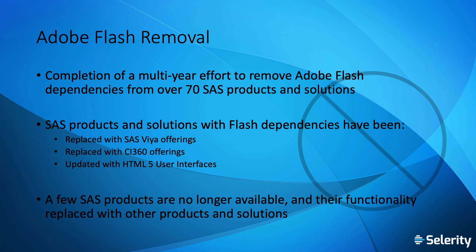Some examples of products that are no longer available and their suggested replacements: contextual analysis has been replaced by visual text analytics 8.3 or later; digital marketing has been replaced by Engage Email 19.03 or later; for customer link analytics, you can consider modernizing with CI360 or moving to visual data mining and machine learning; strategy management, you could consider modernizing with visual analytics. There are also some optional components of data management and the data quality suites that have been removed, such as visual process orchestration, data management console, and SAS Web Studio. In enterprise BI server, the BI dashboard designer has been removed.